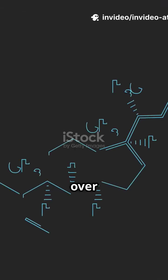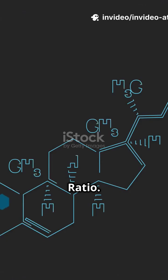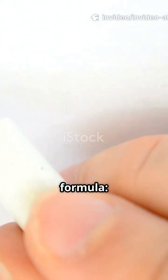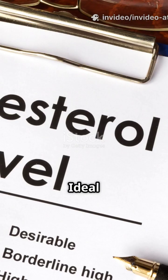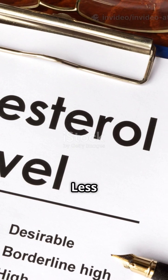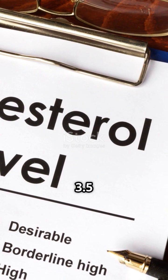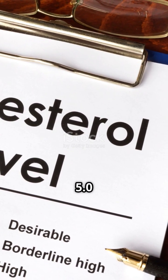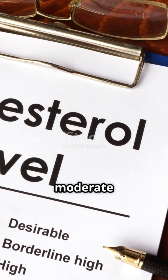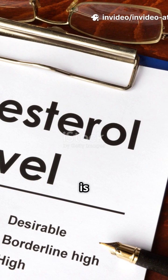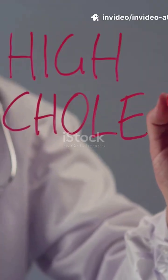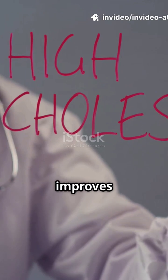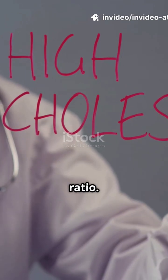First, the total cholesterol over HDL ratio. The formula: TC/HDL equals total cholesterol divided by HDL. Ideal range: less than 3.5 is low risk, 3.5 to 5.0 is moderate risk, and greater than 5.0 is high risk. Lower is better. Higher HDL — the good cholesterol — improves this ratio.